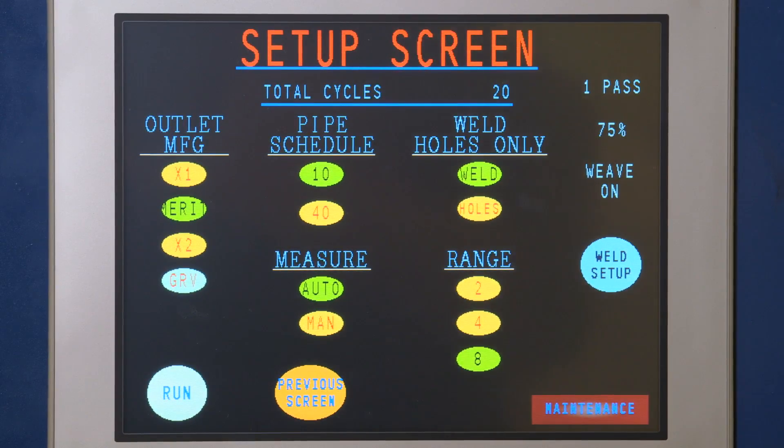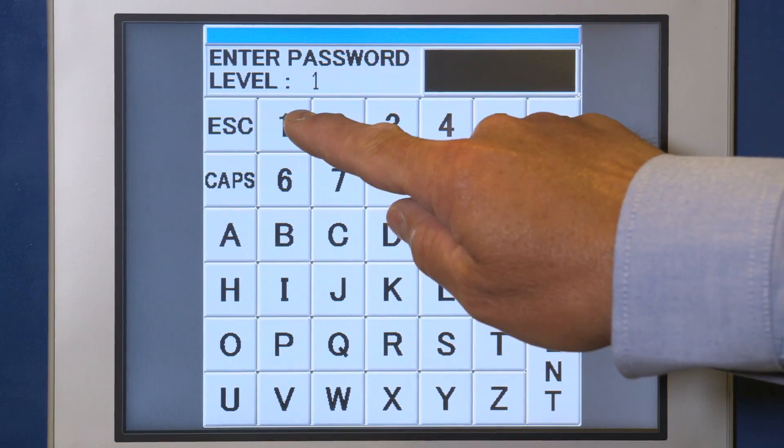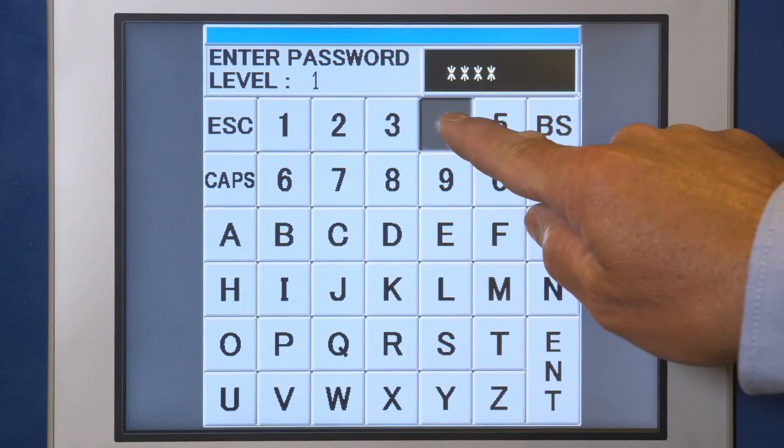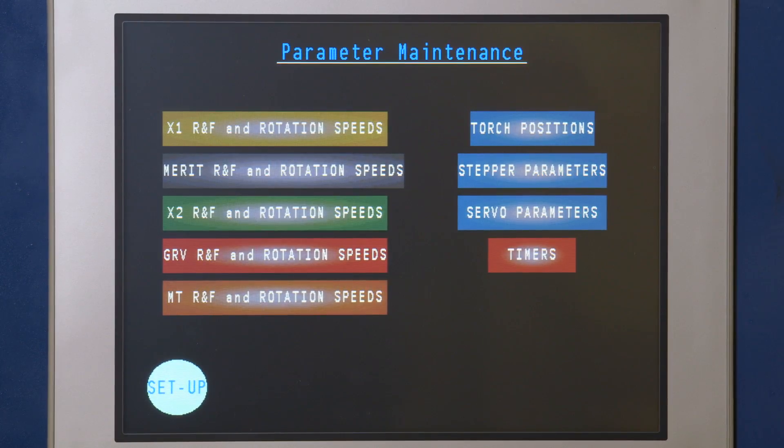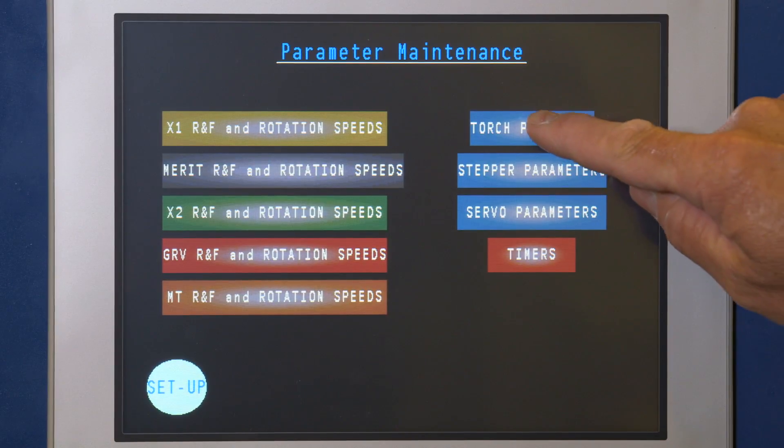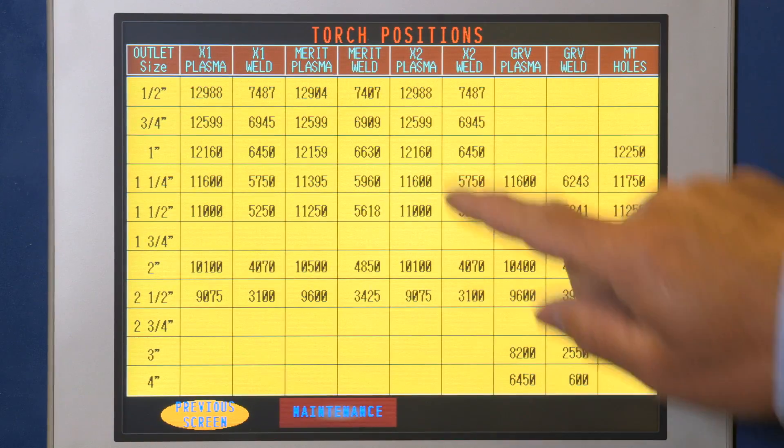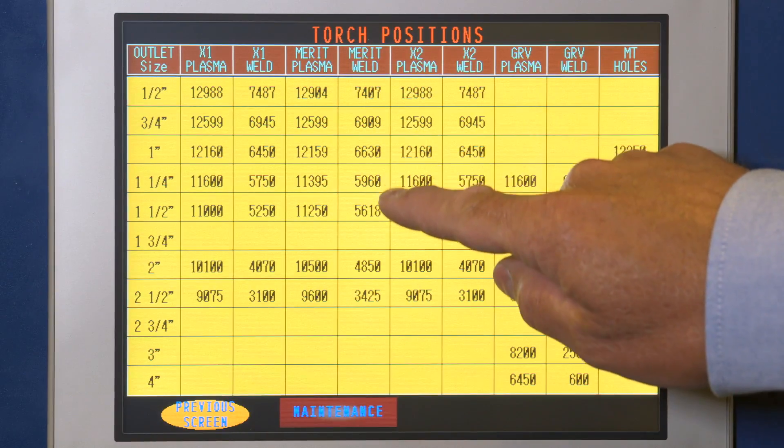Enter your password. Please note the password will timeout after 45 seconds of inactivity. Select torch position, choose outlet manufacturer.